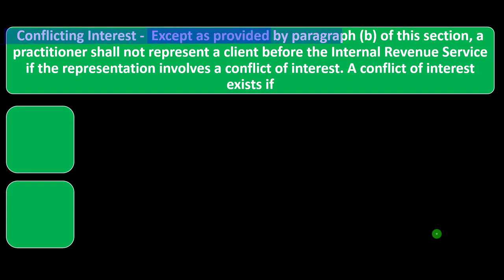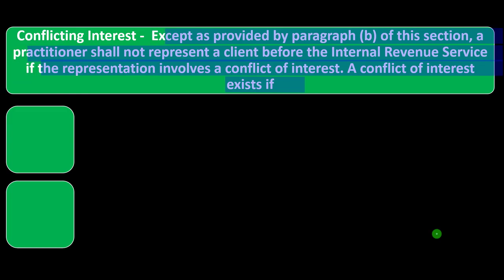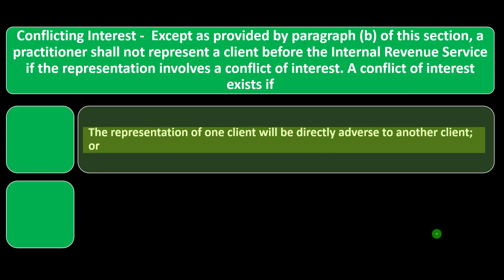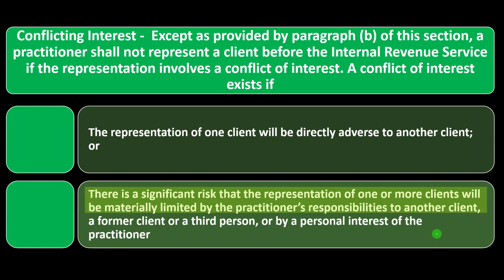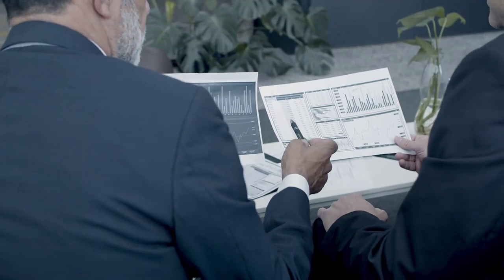Conflicting interests. Except as provided by paragraph B, a practitioner shall not represent a client before the IRS if the representation involves a conflict of interest. A conflict of interest exists if the representation of one client will be directly adverse to another client, or if there is a significant risk that the representation of one or more clients will be materially limited by the practitioner's responsibilities to another client, former client, a third person, or by the personal interest of the practitioner.